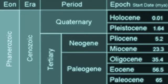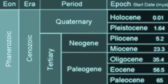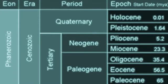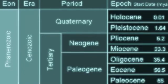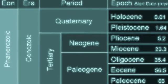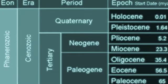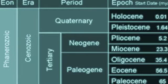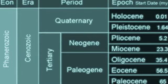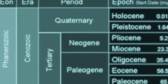The periods during the Cenozoic era included the Paleogene period, which lasted from 65.5 million years ago to 23.03 million years ago. The Neogene period lasted from 23.03 million years ago to 2.588 million years ago. The last period is the Quaternary period, which started from 2.588 million years ago to the current day.